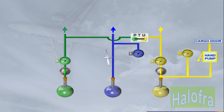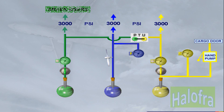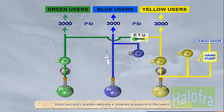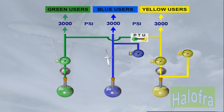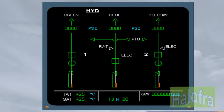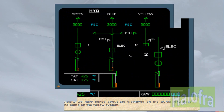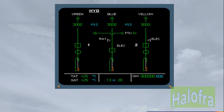Each hydraulic system delivers a constant pressure to the users. The components we have talked about are displayed on the ECAM hydraulic page, except the hand pump on the yellow system. Let's briefly review the basic system using the ECAM hydraulic page.